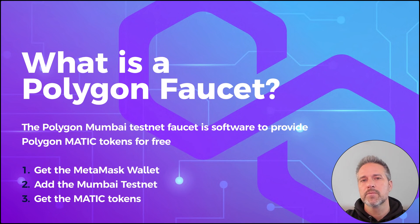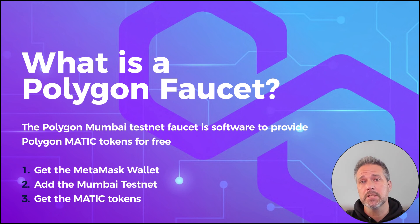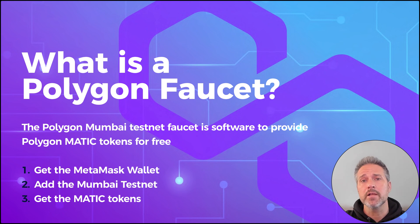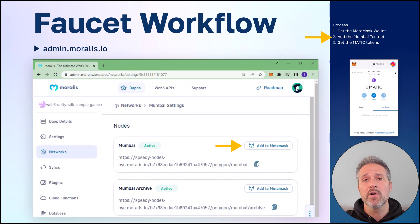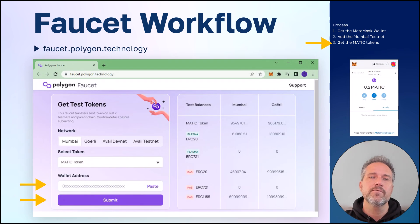A Polygon faucet is software we visit while on the testnet. Transactions still require some currency, so the faucet lets us get MATIC tokens for free to use in development. The steps are: get the MetaMask wallet, add the Mumbai testnet, and get some MATIC tokens. Get MetaMask from metamask.io, visit admin.morales.io to add the Mumbai testnet, and visit faucet.polygon.technology to add MATIC tokens to your account.